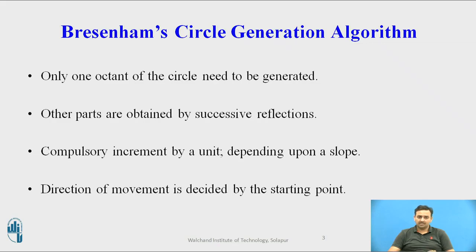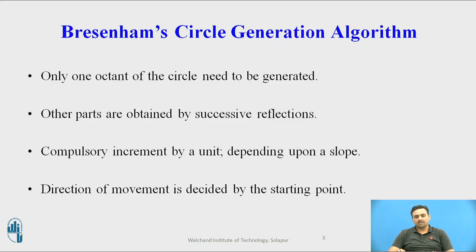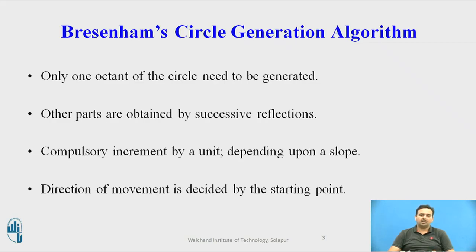During circle generation, you have to decide which should be your next pixel. On every pixel, you have only three options: either you move vertically, either you move horizontally, or you move diagonally. The increment and decrement of X and Y is dependent on these situations, and one axis value will compulsorily be incremented, based on the slope of the circle at that point.